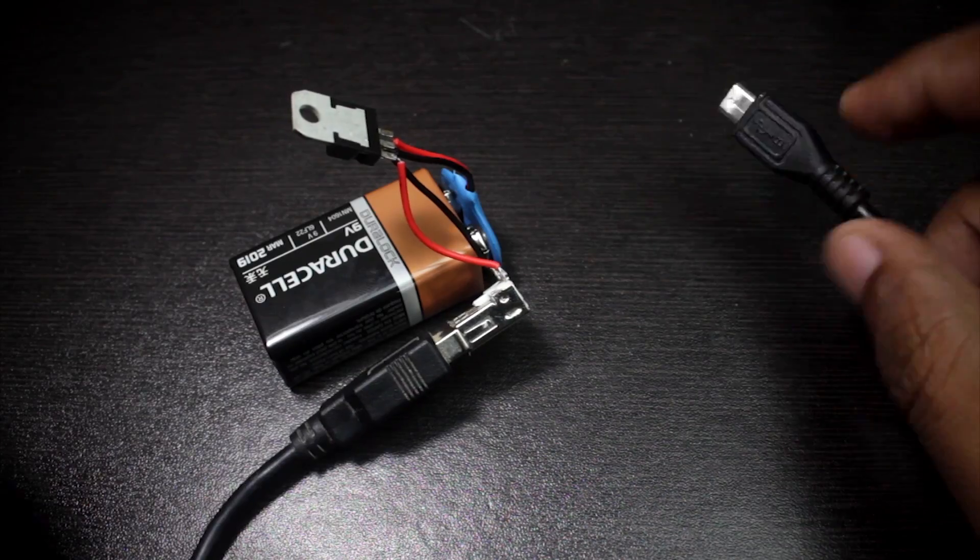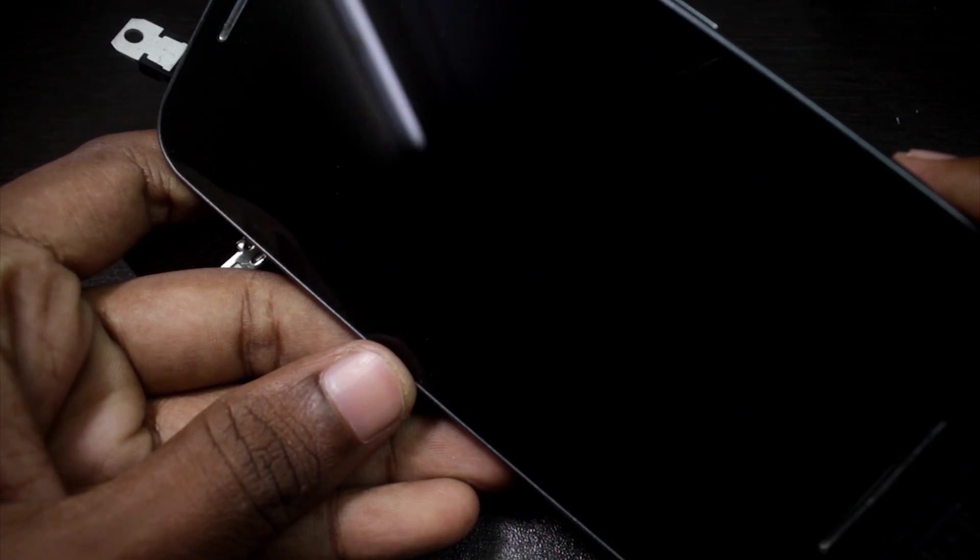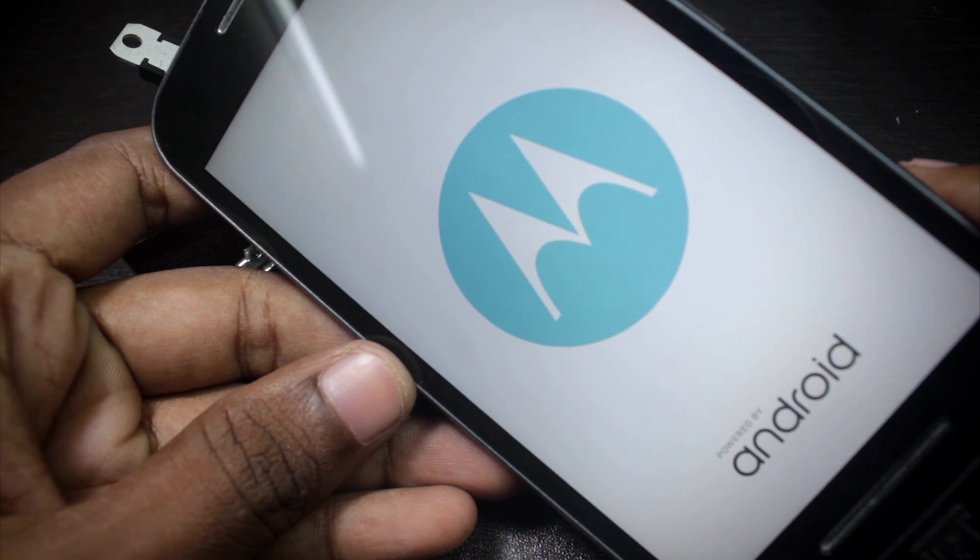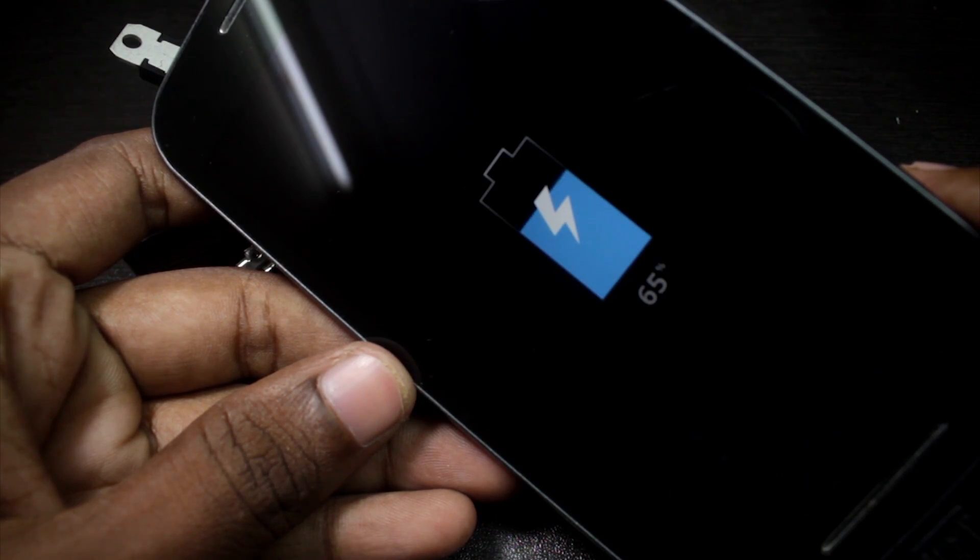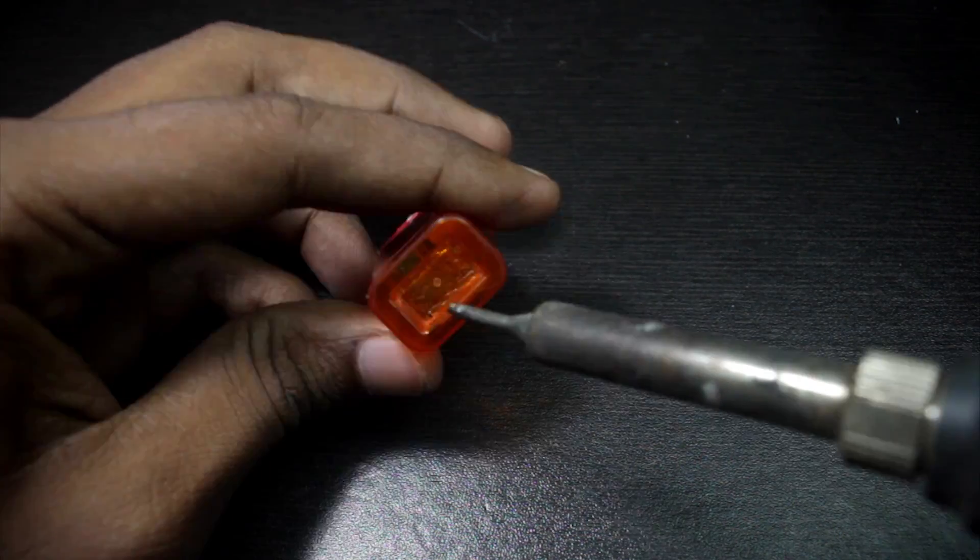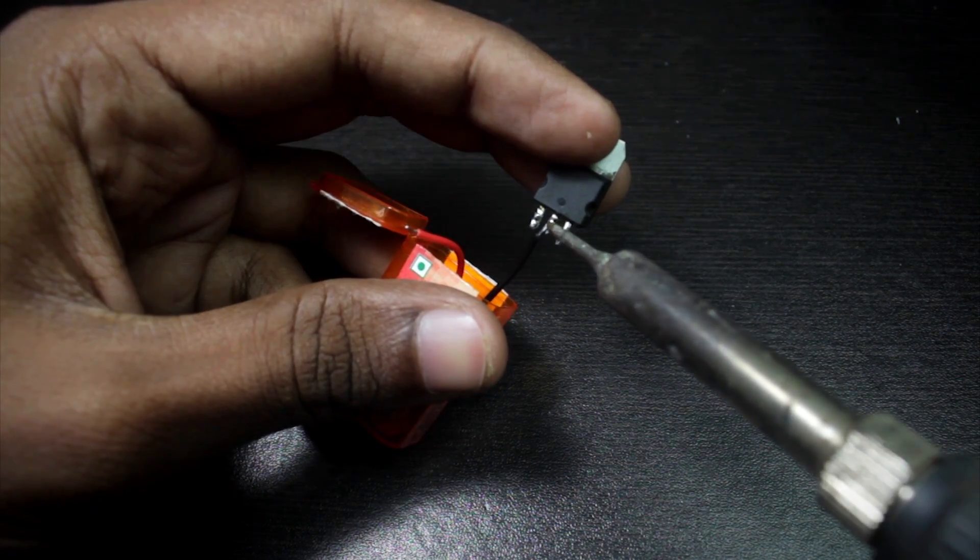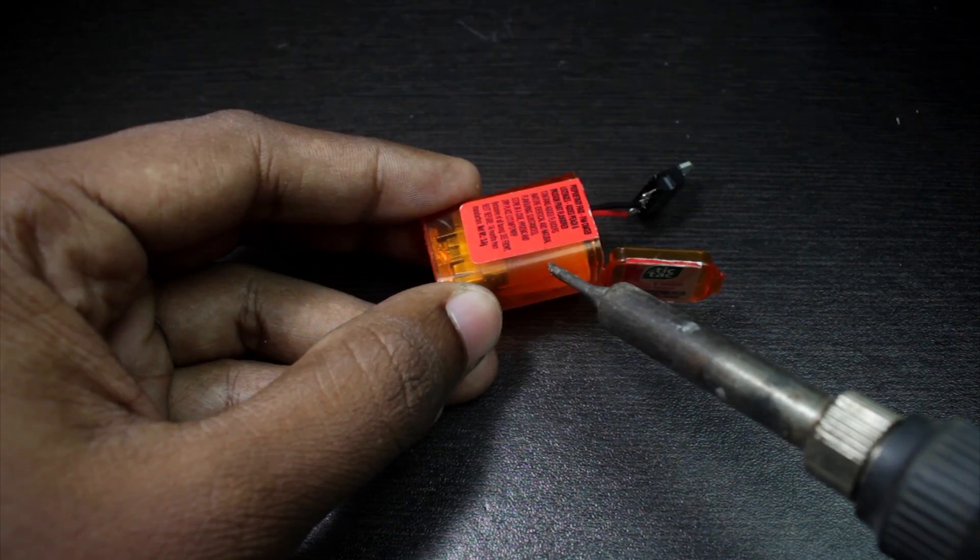Now we can put the entire thing inside this Tic Tac box. First goes the USB socket, then comes the regulator, and then the battery connector.